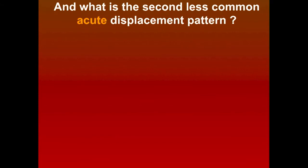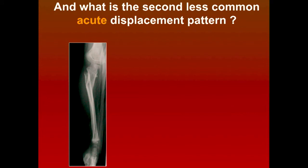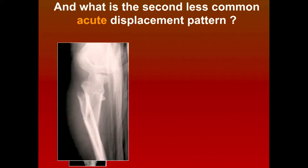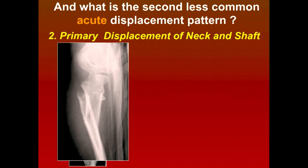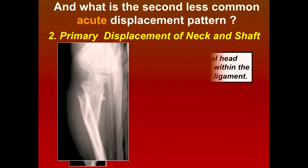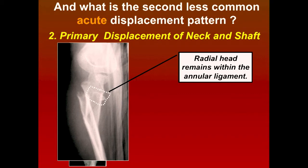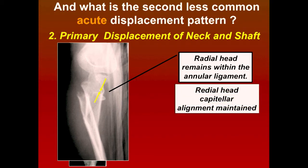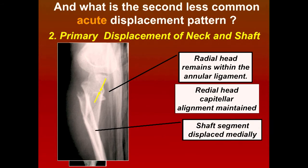In the second, less common pattern, the radial head remains within the orbicular ligament and the radiocapitellar ligament is maintained, but the shaft segment is displaced medially. This is rare, but you need to understand that here you really need to focus on reducing the ulna — and usually the radial head will realign once the ulna is reduced.